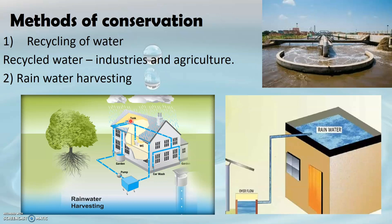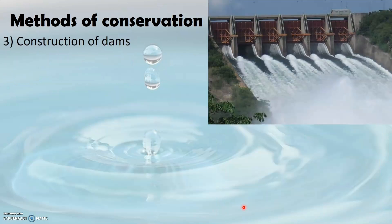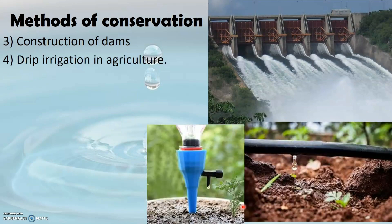Rainwater can also be collected on rooftops, as you see here in the picture, and this rainwater stored in tanks can later be used for various purposes. Construction of dams for adequate collection of water, and also usage of a drip irrigation system in agriculture, are some other methods by which we can preserve or conserve water.